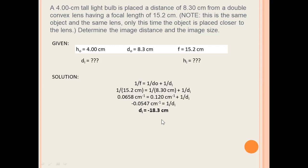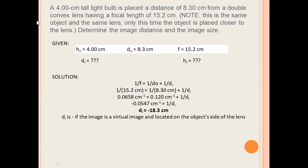Now let's proceed to solving the image size or image height. Take note: if the image distance (DI) is negative for the lens, the image is a virtual image and it is located on the object's side of the lens.